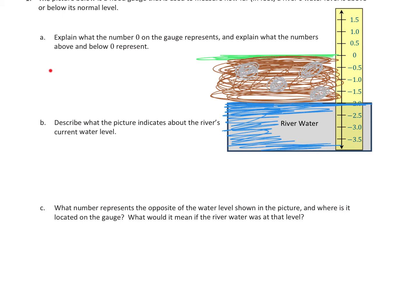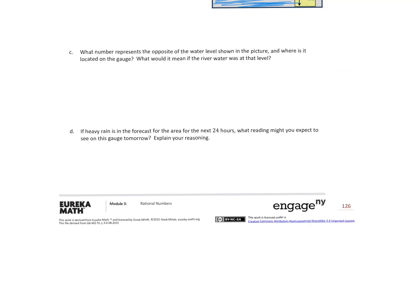So now that you've put into perspective the common sense and reasonableness and reality of this question, now it's pretty easy to explain here what zero represents, to explain here what it tells you about where the river water is compared to sea level, what number represents the opposite of the water level shown. And what would it mean if the river was at that level? And then of course, a fun question here on what you might expect to see on the gauge tomorrow, if it did nothing but rain for 24 hours straight.